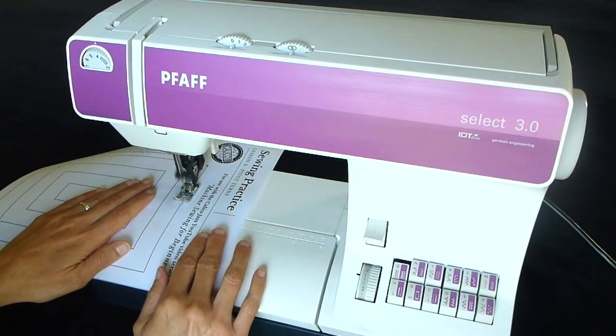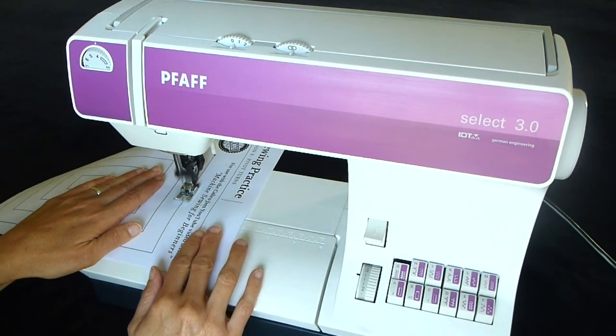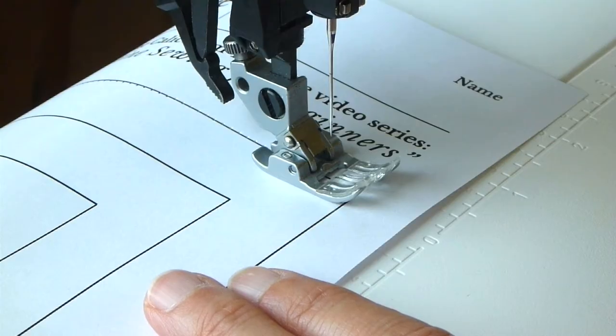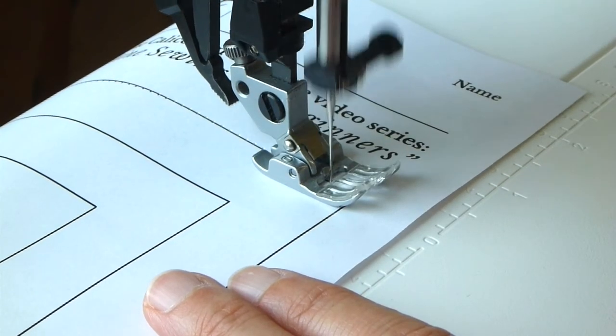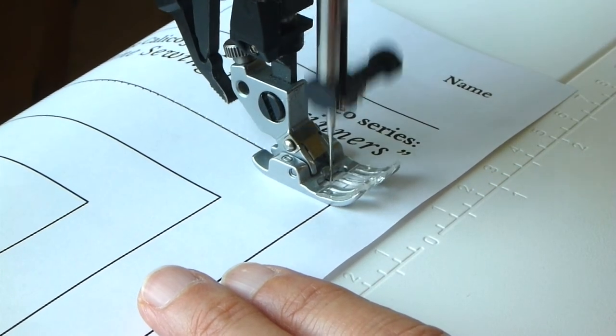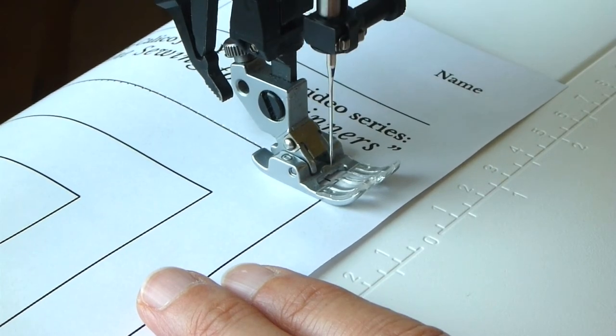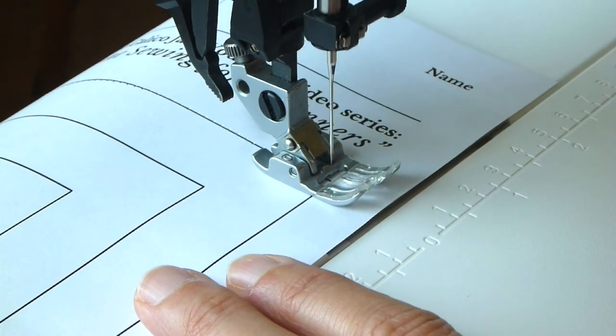When you get close to the first corner, take your foot off the foot pedal and turn the handwheel toward you to complete the next few stitches by hand until the needle goes down into the first corner.